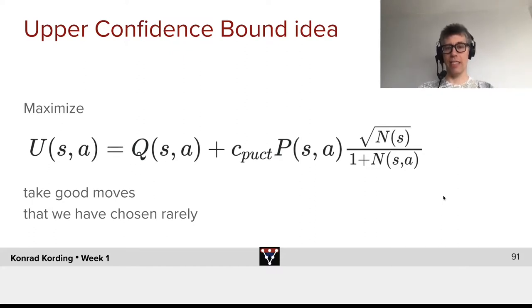And then here we have the policy P of s and a, multiplied with square root of N of s divided over one plus N of s and a.